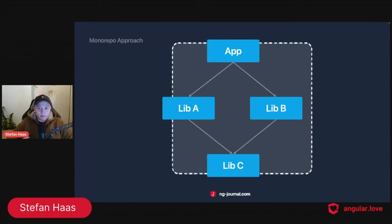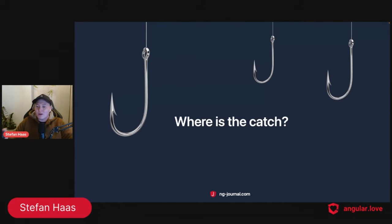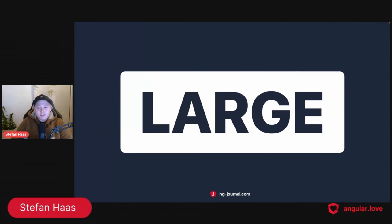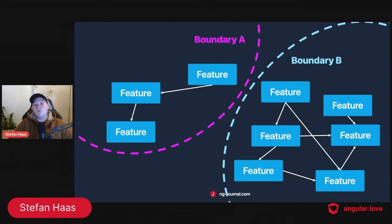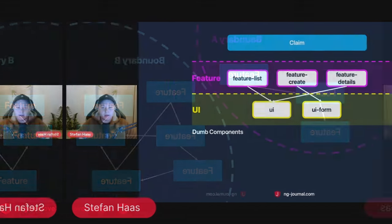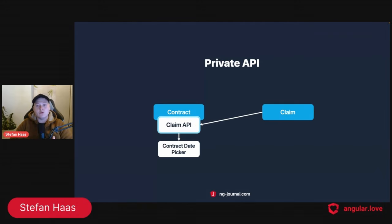An easy fix would be to go with a monorepo because in a monorepo you no longer have to distribute your libraries. But where's the catch? Why is not everybody already using monorepos? The answer is monorepos usually tend to get really large. So instead of thinking about boundaries afterwards, we now make very isolated systems with a data access layer and private APIs that expose just the bare minimum needed by other consuming domains.